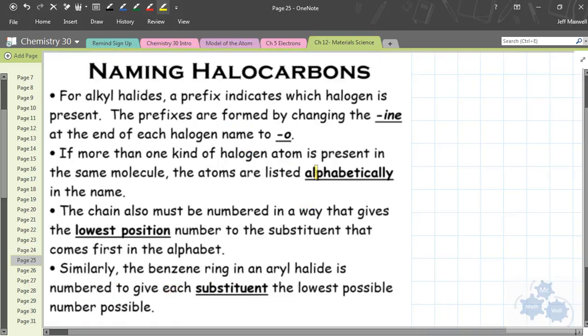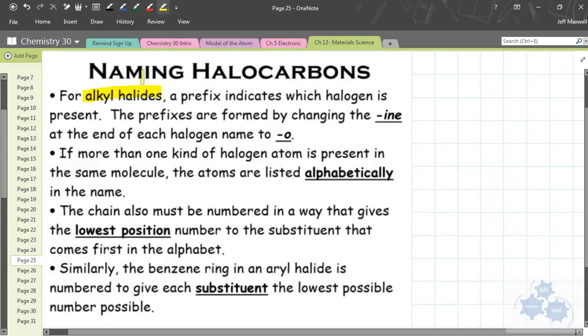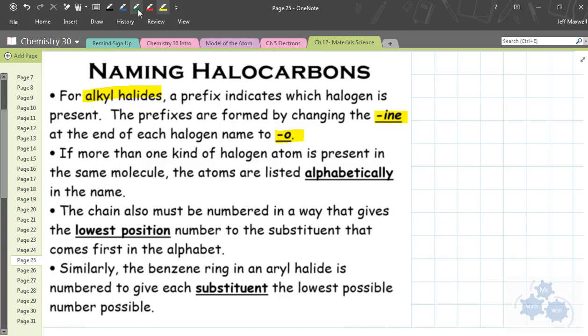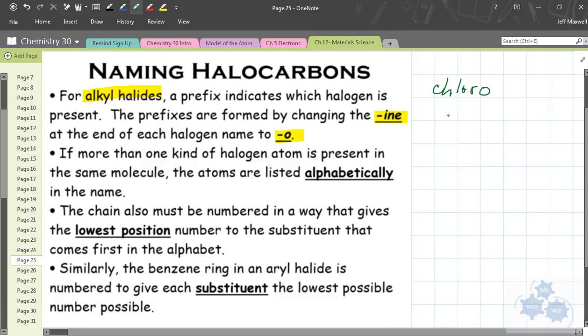What we want to do is talk about naming halocarbons. We talked a little bit about this yesterday, and you know a little bit about this already. For alkyl halides, not attached to benzene rings, the big thing is the prefix indicates which halogen is present. So if we have fluoro or chloro or bromo or iodo, we replace the ene, so chlorine would be chloro. You change the ending of the halogen name from ene to o, so it would be like chloro would be the first part of a compound with chlorine on it.